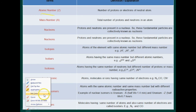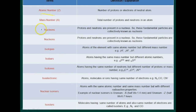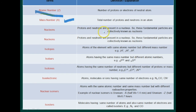The atomic number is the number of protons. The mass number is the total number of protons and neutrons in an atom. Protons and neutrons are present in the nucleus, and these fundamental particles are collectively known as nucleons.